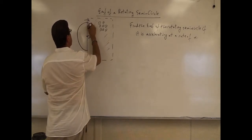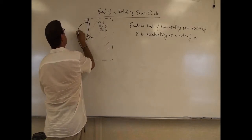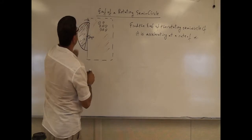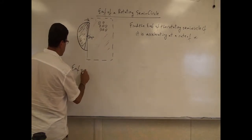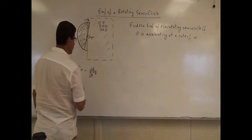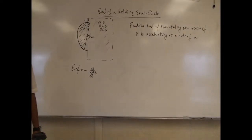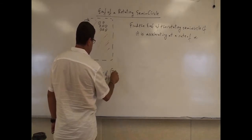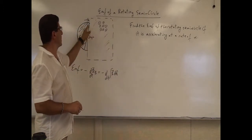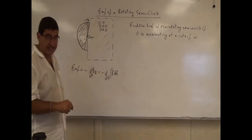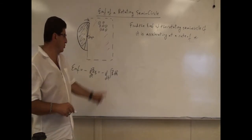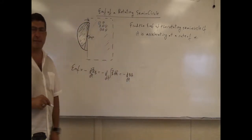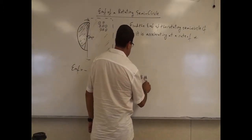After it has rotated through a certain angle, we ask: how much of the semicircle is inside the magnetic field? The EMF induced is minus d/dt of Φ_B — the rate of change of the magnetic flux. So EMF = -d/dt of B·dA. Since the magnetic field is out of the board and constant, we don't need to integrate, giving us EMF = -B · dA/dt.